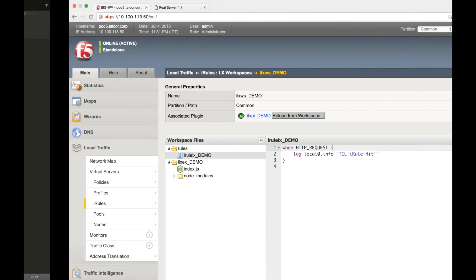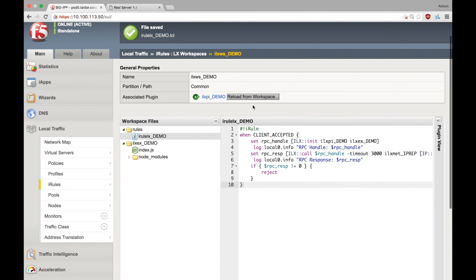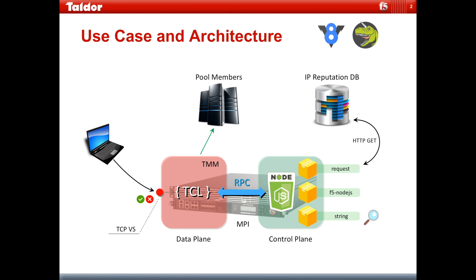Let's copy the code, paste it into the workspace, save the file and update the plugin. This is it for part 2 of the tutorial and for the TCL iRule part of the configuration. I hope this has been informative and I'll see you in the next video. Bye!